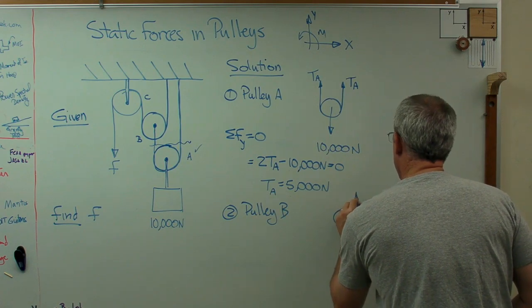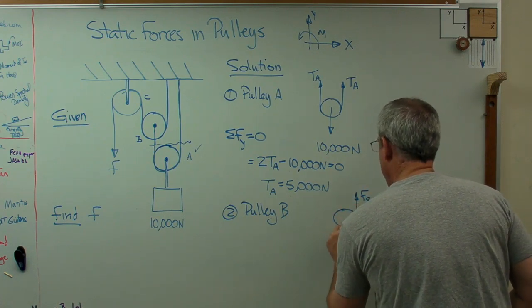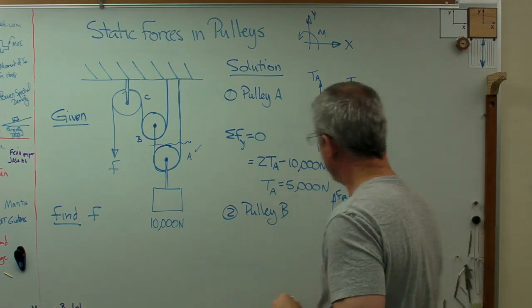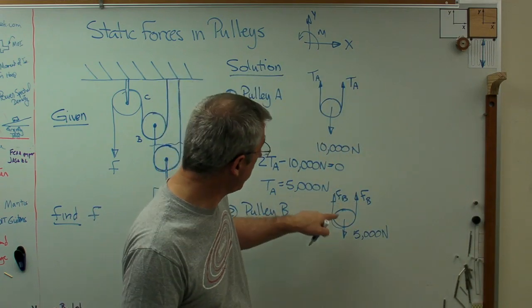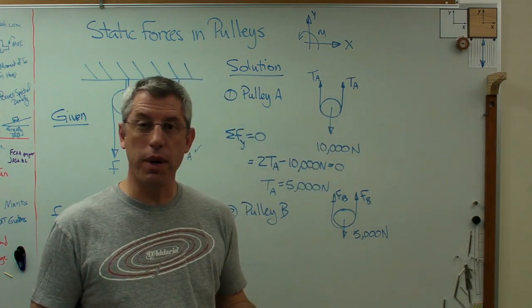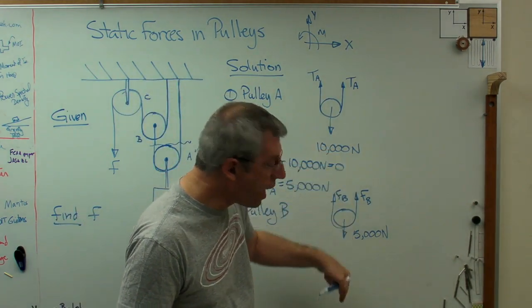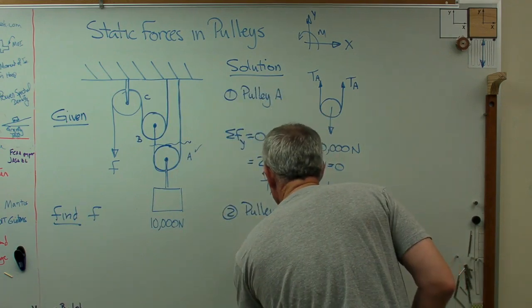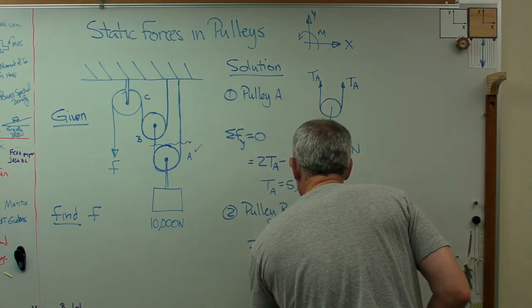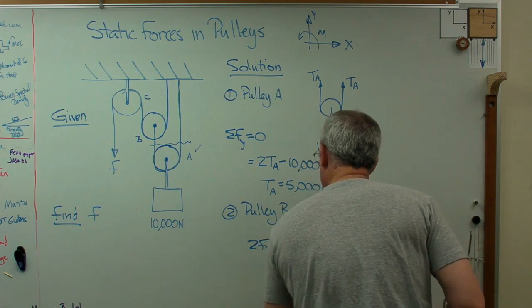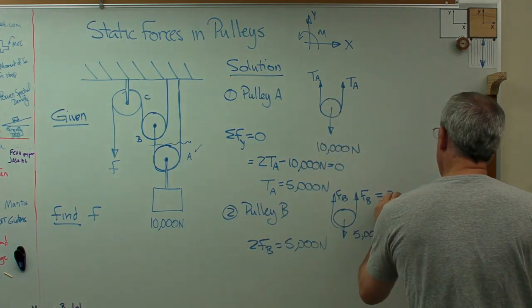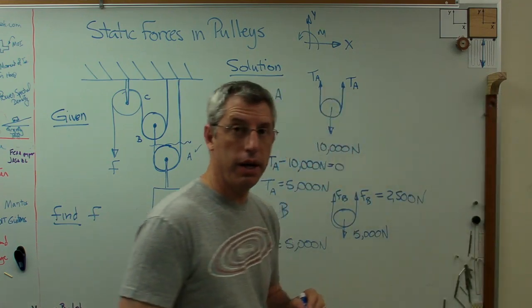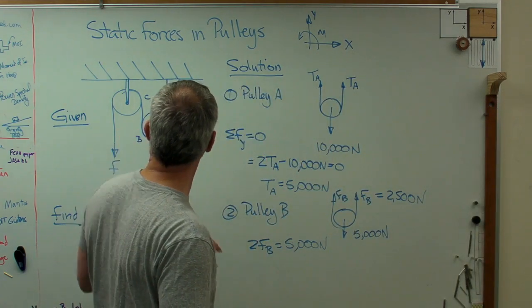And same thing. Now I've got FB and now I've got FB over here. So same thing. I can write vertical force is 2FB. The vertical force down is 5,000 newtons. And so I can write 2FB equals 5,000 newtons. So that means FB is going to be 2,500 newtons. So now I know what's going on there.